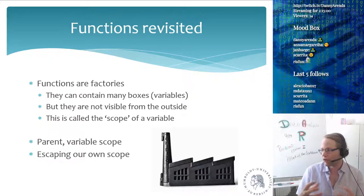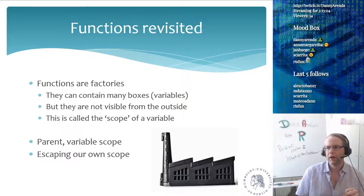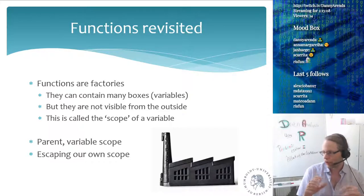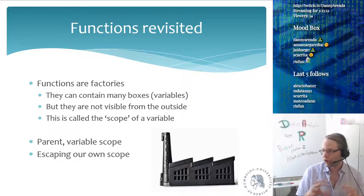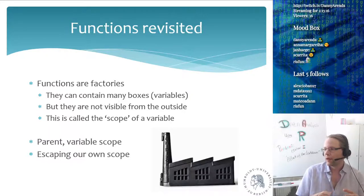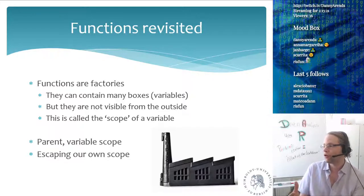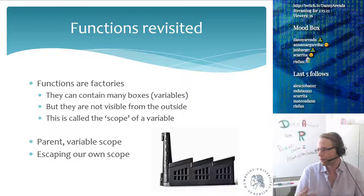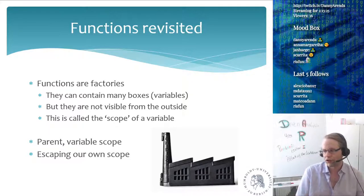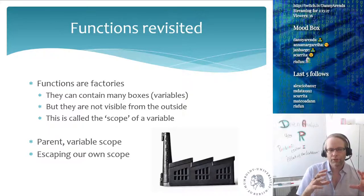Functions are factories — they can contain many control structures like conveyor belts, and they can contain many variables. But all of those boxes inside the factory, inside the function, are not visible from the outside. This is called the scope of a variable. A variable lives in a function and when the function ends, the variable ceases to exist. There is also the parent scope.